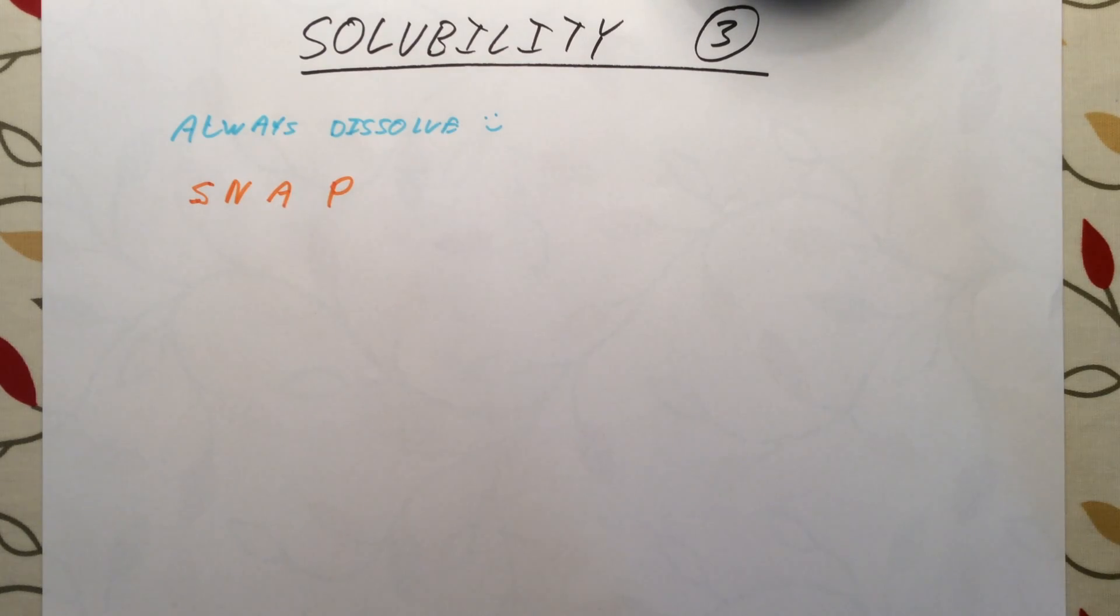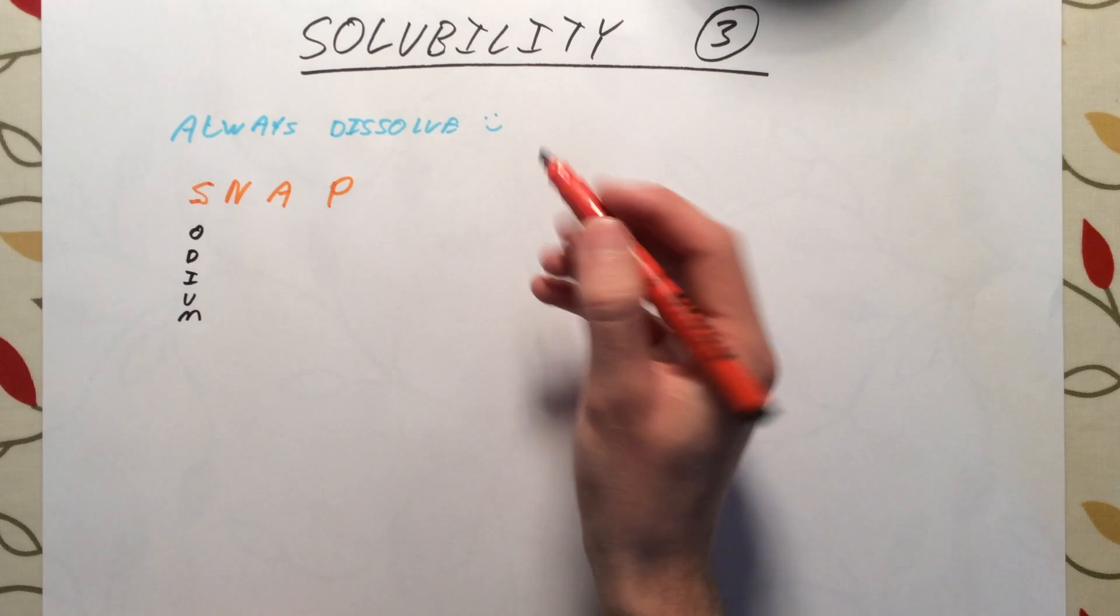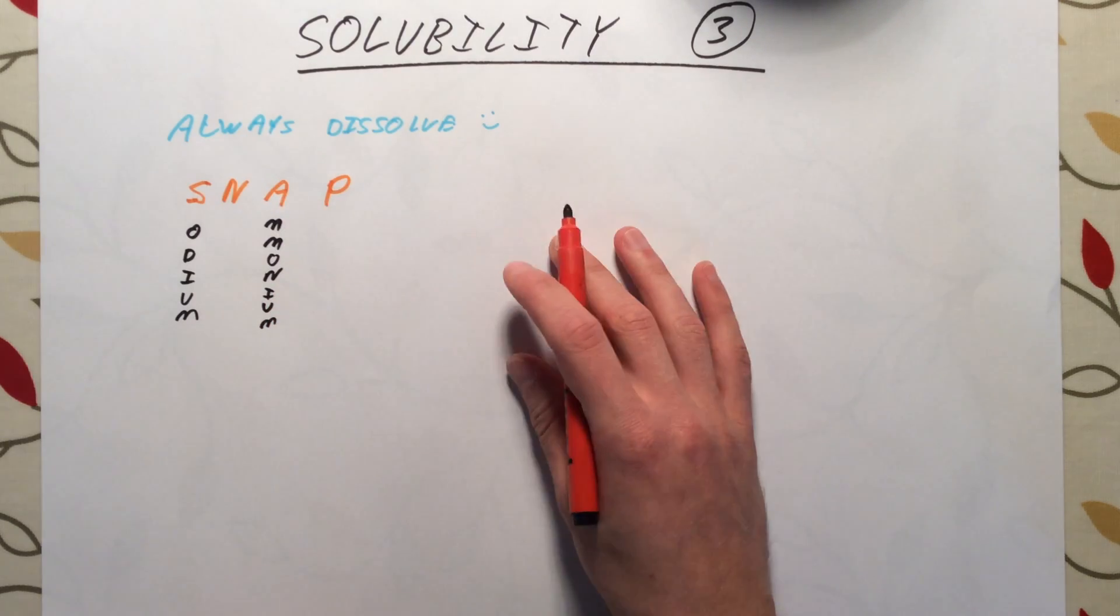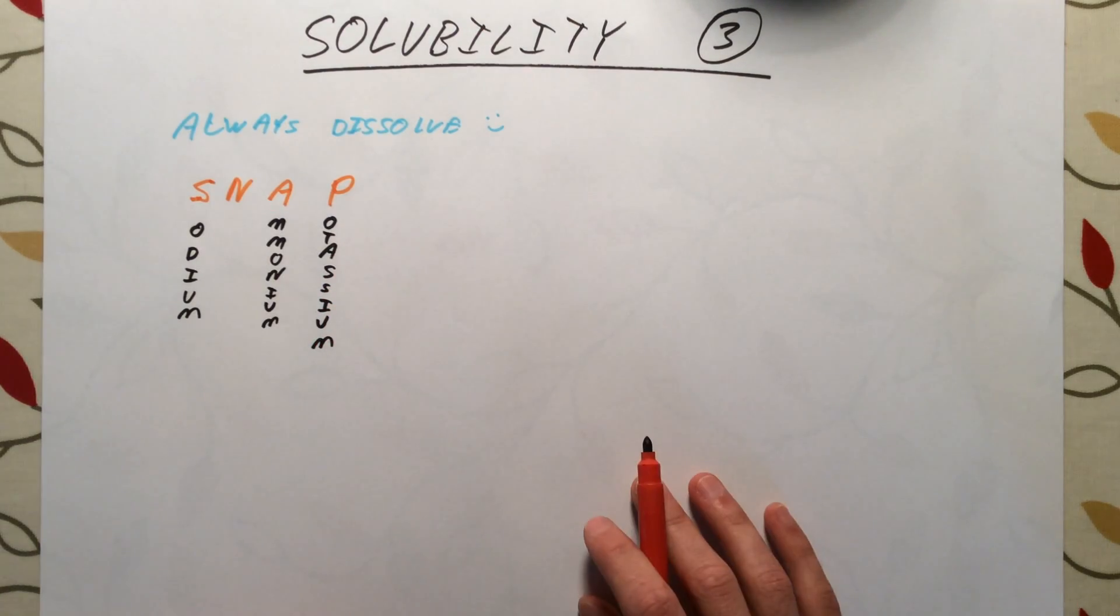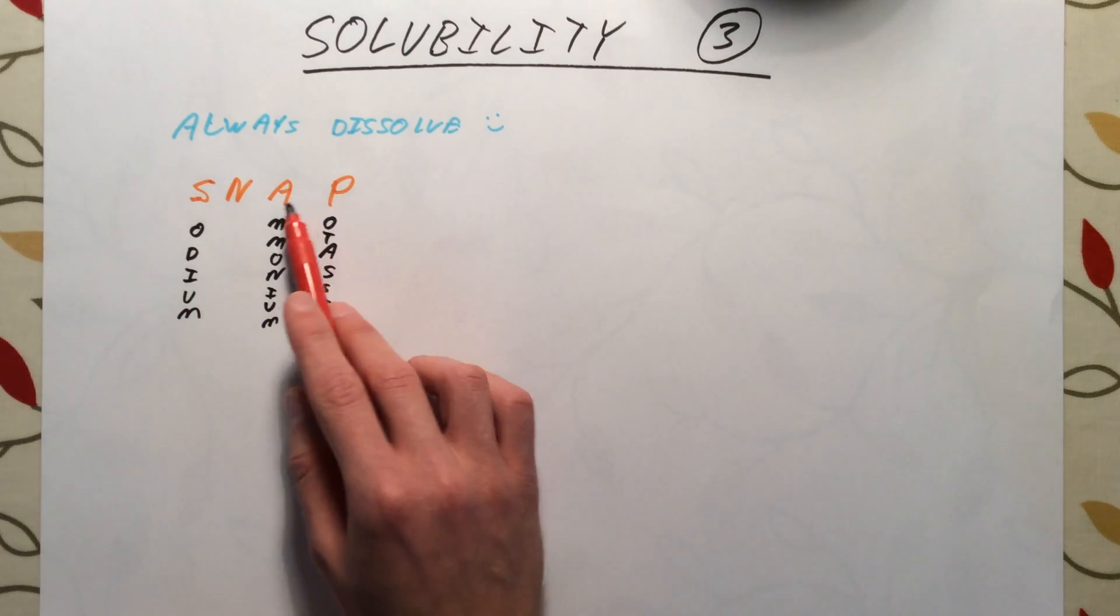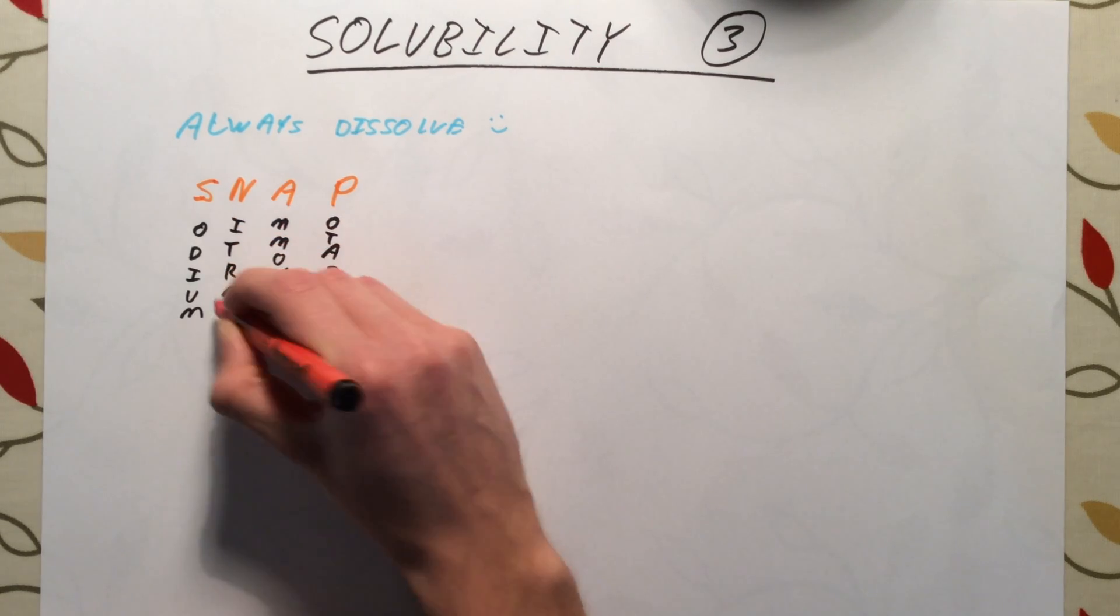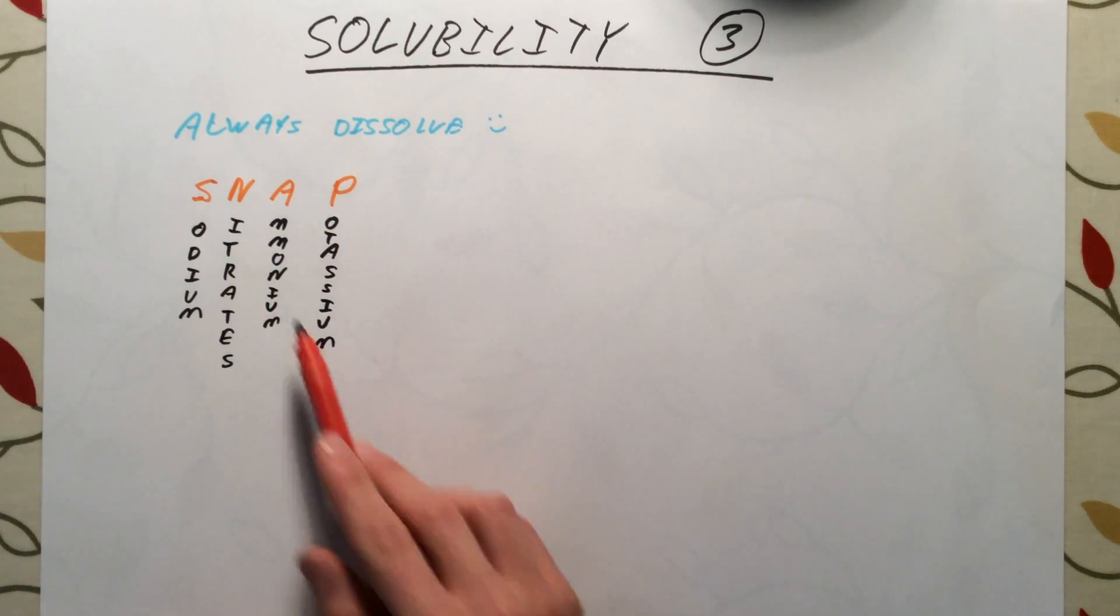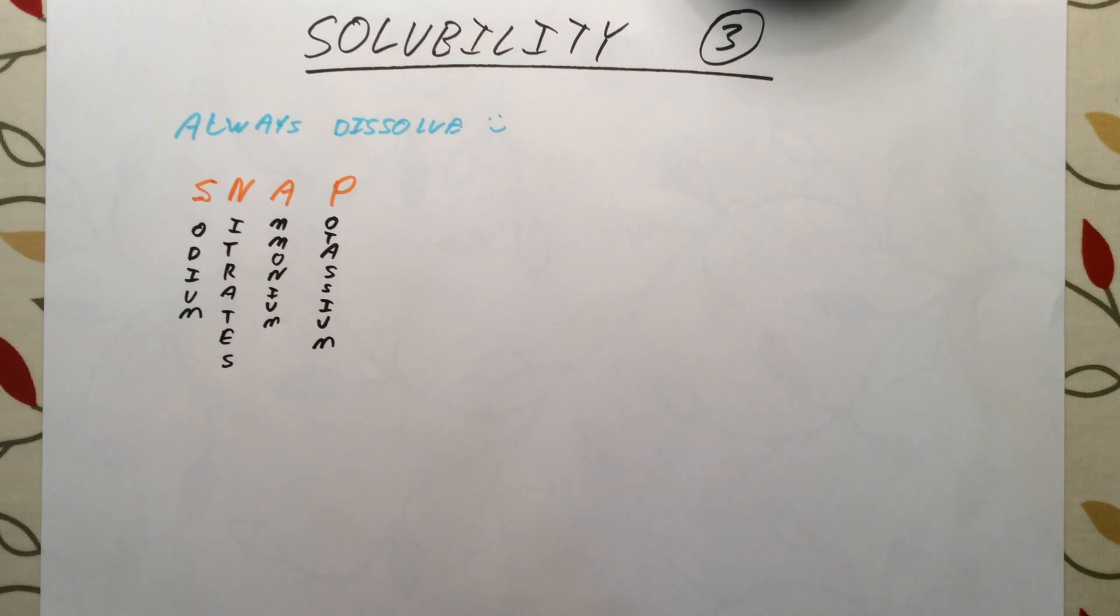What SNAP refers to is any sodium salt will always dissolve in water. Any ammonium salt, so for example ammonium nitrate, will dissolve in water. Any potassium salt will also always dissolve in water. These are our metals or our cations - sodium, potassium, ammonium. There is also an anion or negative ion, which is all nitrates also dissolve. So sodium nitrate will dissolve in water, sodium chloride will dissolve in water, sodium phosphate will dissolve in water. Any sodium salt will dissolve, any nitrate will dissolve, ammoniums and potassium salts will all dissolve.